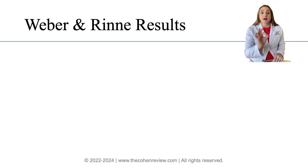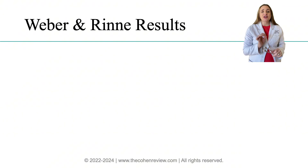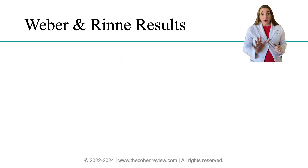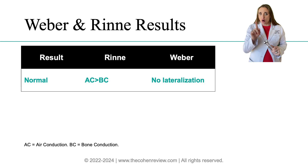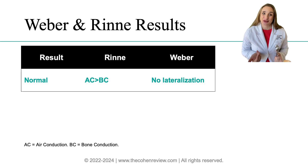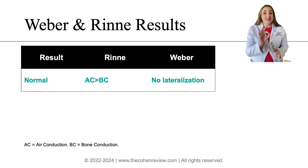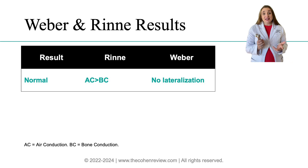Now let's dive into interpreting the actual results of the Weber and the Rinne. If the Rinne test shows air conduction is greater than bone conduction and the Weber shows no lateralization, then you have normal results — no hearing issues. If you remember this for result interpretation alone, you are all set for the nurse practitioner boards, because if you remember what is normal, you know how to recognize what is abnormal.